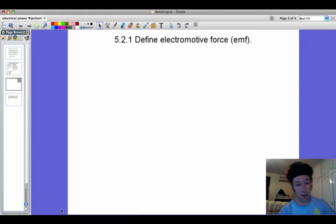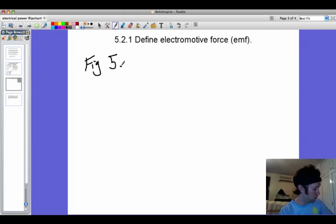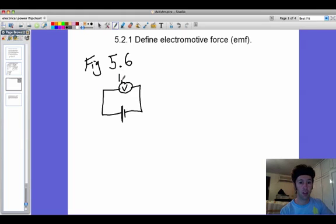Now let's define the electromotive force. So let's call this figure 5.6. And let's say that you've got a battery and you just connect to this battery a voltmeter. And this voltmeter might say that you've got about 1.5 volts when there is no current flowing through it.